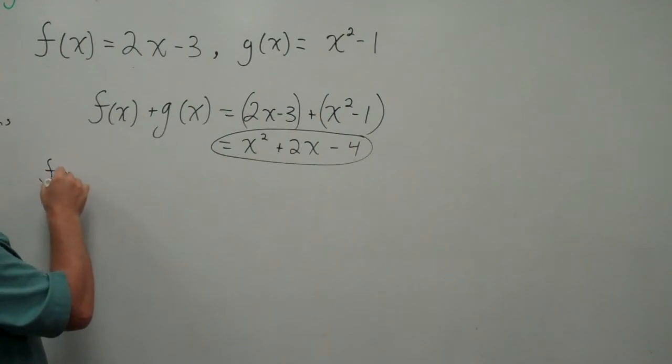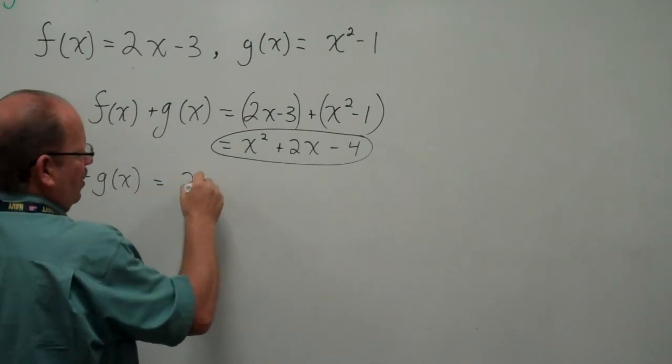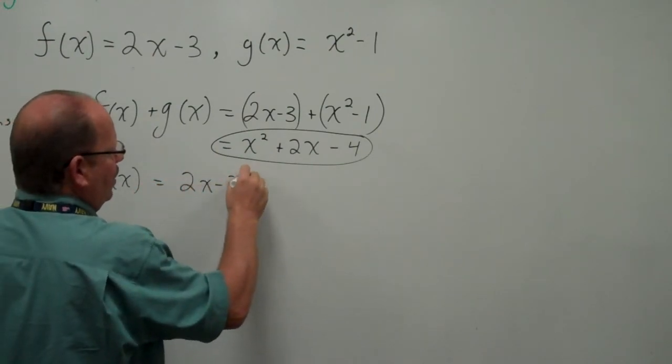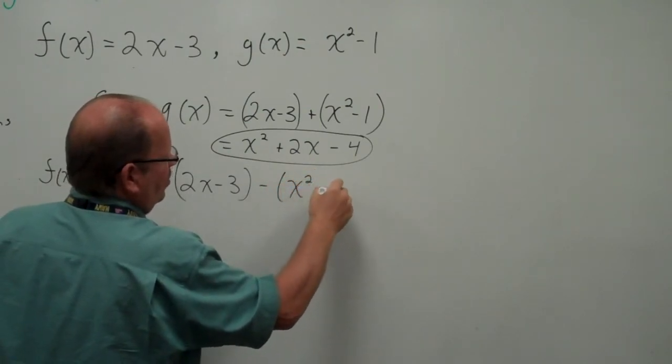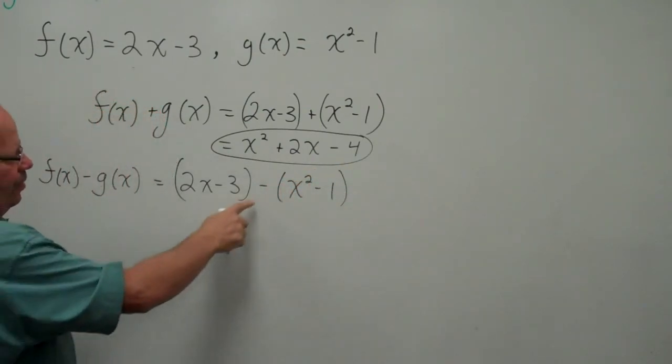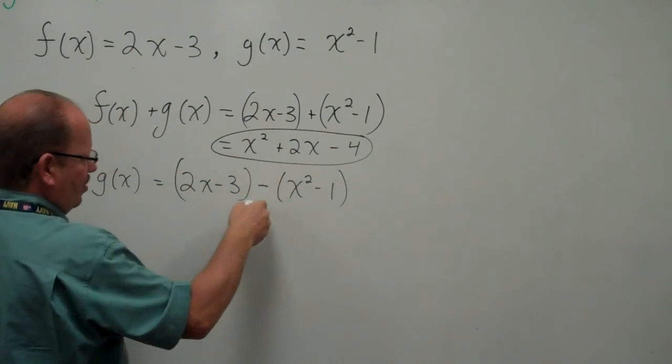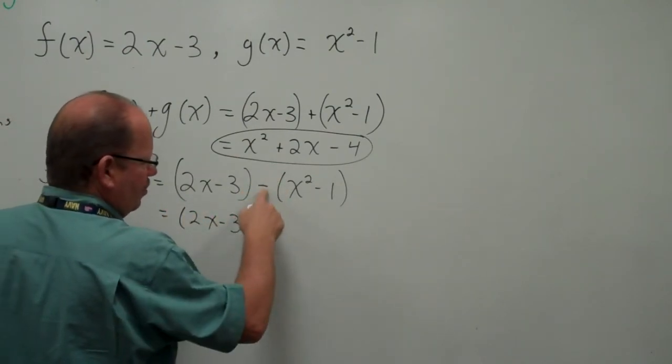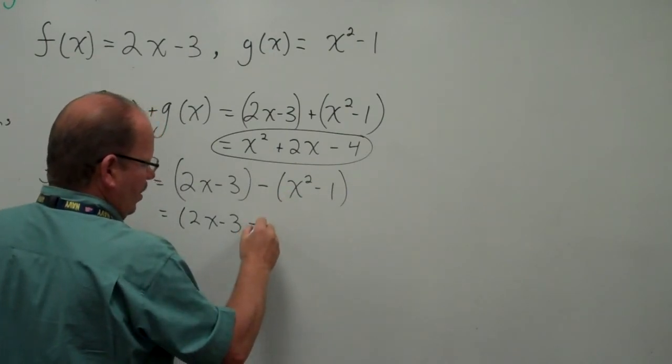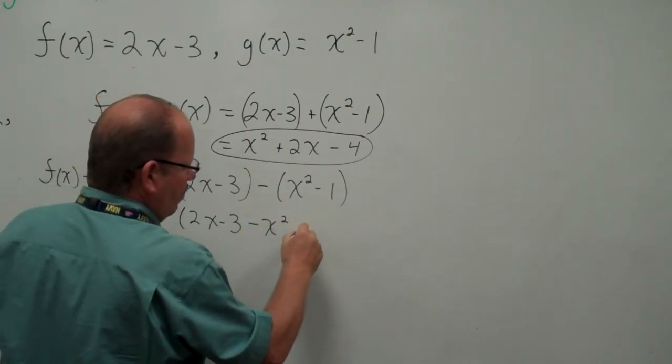If I have f(x) - g(x), I'm going to have, that's right, you said it, (2x - 3) - (x² - 1). Now to remove this parentheses, remember, both signs change, so we have -x² and then we have +1.